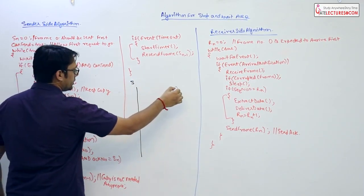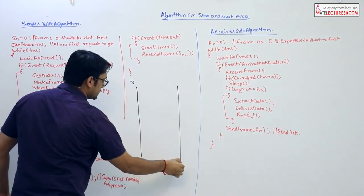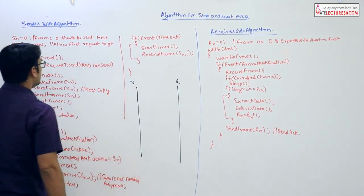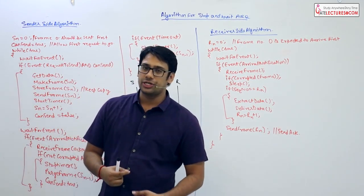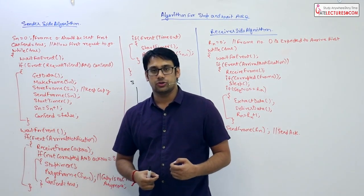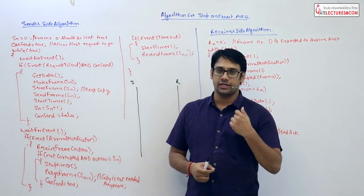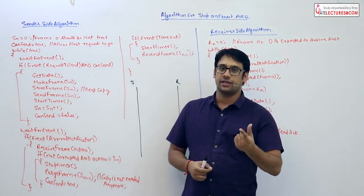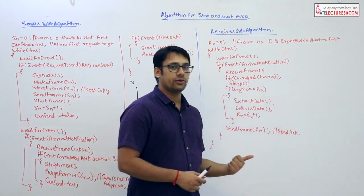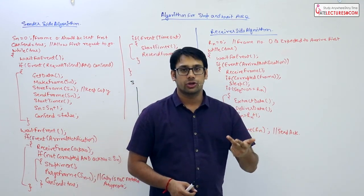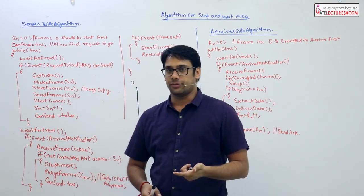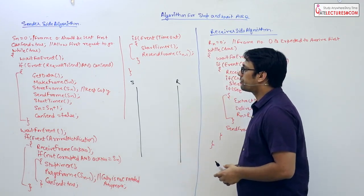Assume this is the sender side and this is the receiver side. At the sender side we are going to maintain two things: number one is a serial number for the data packets, and secondly a timeout timer. At the receiver side we are only going to maintain a serial number — we are not going to maintain a timeout timer.